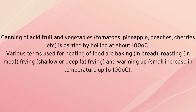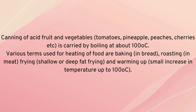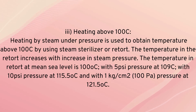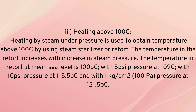Canning of acidic fruits and vegetables such as tomatoes, mangoes, peaches, and cherries is carried out by boiling at 100°C. Various terms used for heating of food include baking (for bread), roasting (for meat), frying, shallow or deep frying, and warming up — all involving temperatures up to 100°C. Heating above 100°C is achieved by using steam under pressure. The temperature in the retort increases with increasing steam pressure: at sea level it is 100°C; with 5 psi pressure it reaches approximately 109°C; and with 10 psi pressure approximately 115°C.